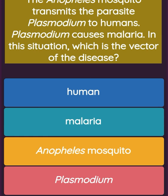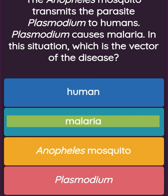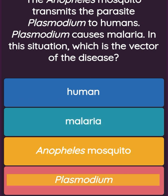The Anopheles mosquito transmits the parasite Plasmodium to humans. Plasmodium causes malaria. In this situation, which is the vector of the disease? Option one: human. Option two: malaria. Option three: Anopheles mosquito. Option four: Plasmodium.